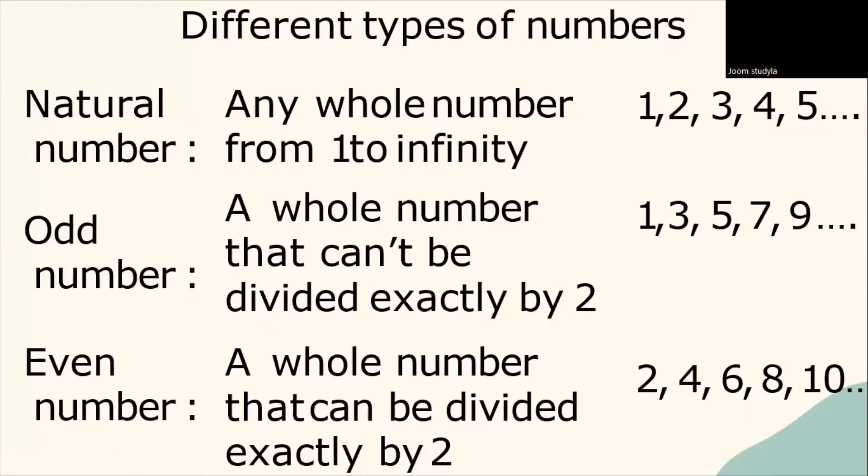Without further delay, let's begin with identifying different types of numbers. We have a natural number. What is a natural number? Natural number is any whole number from 1 to infinity.